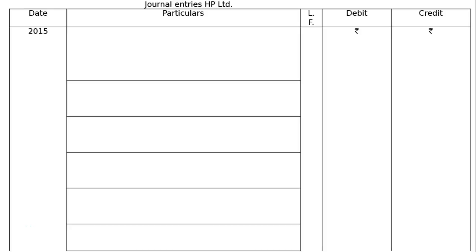The question is: HP Limited has 1 lakh 8% debentures of rupees 50, totalling 50 lakhs, due for redemption in five equal installments starting from 31st March 2015. That is rupees 10 lakhs per installment. The debenture redemption reserve has a balance of rupees 5 lakhs on that date. Pass journal entries.